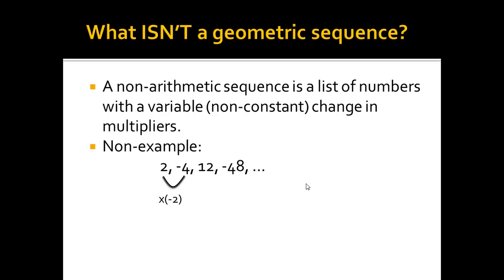But from -4 to 12, I'm multiplying by -3. And then from 12 to -48, I'm multiplying by -4.